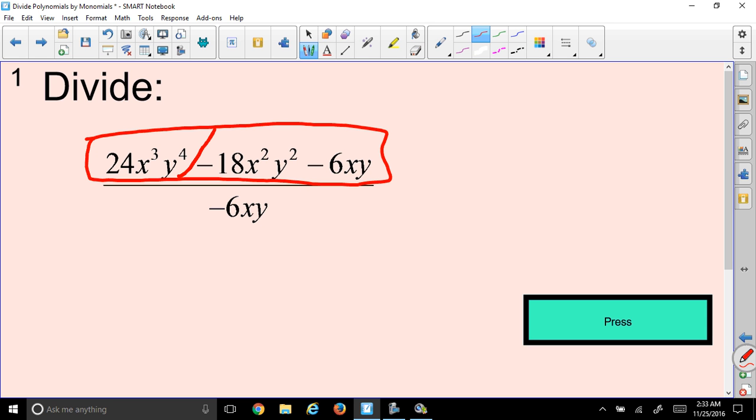And draw lines in between the plus and minus signs to cut it up into Hershey pieces. So now we're going to divide each one of these pieces by the denominator here. So the denominator is negative 6xy.